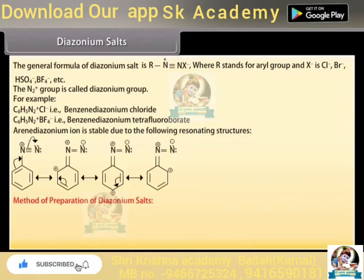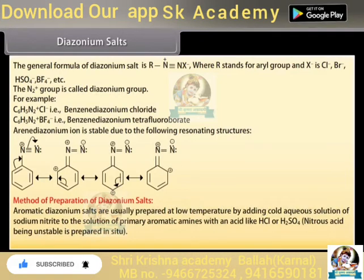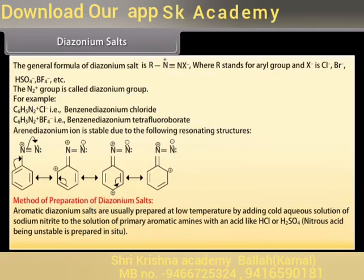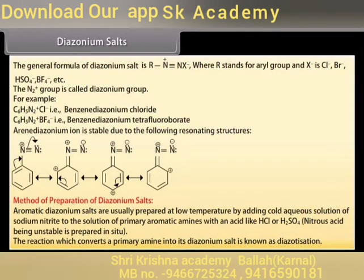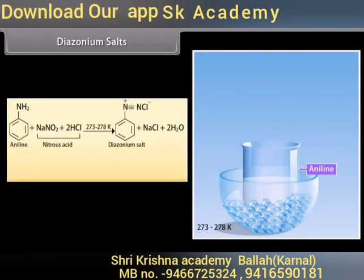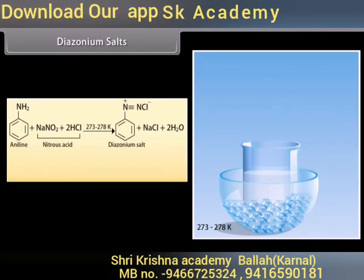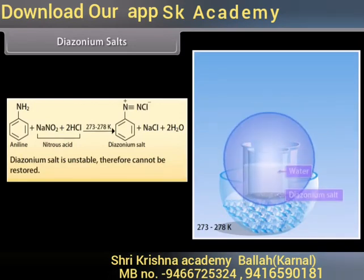Method of preparation of diazonium salts: Aromatic diazonium salts are usually prepared at low temperature by adding a cold aqueous solution of sodium nitrite to the solution of primary aromatic amines with an acid like hydrochloric acid or sulfuric acid, because nitrous acid being unstable is prepared in situ. The reaction which converts a primary amine into its diazonium salt is known as diazotization. Aniline reacts with cold aqueous sodium nitrite and hydrochloric acid at 273–278 K to produce diazonium salts. Diazonium salt is unstable and therefore cannot be stored.